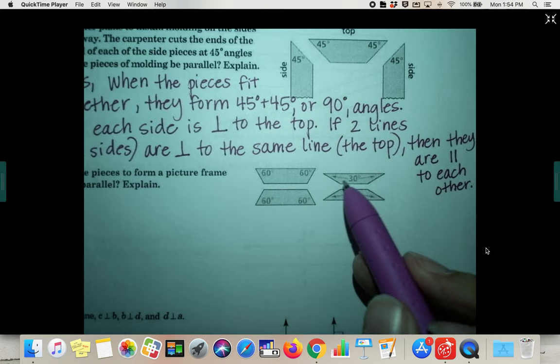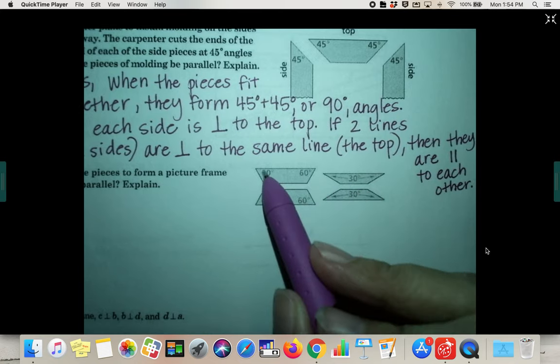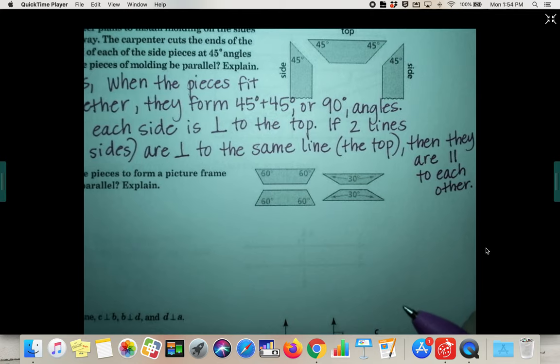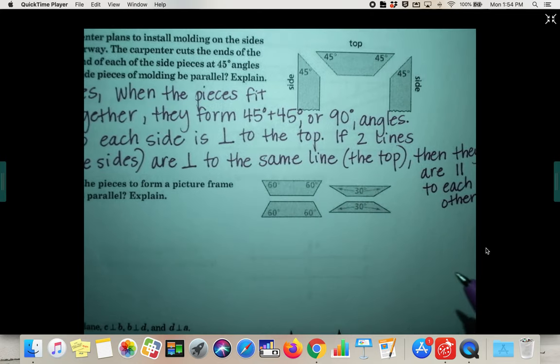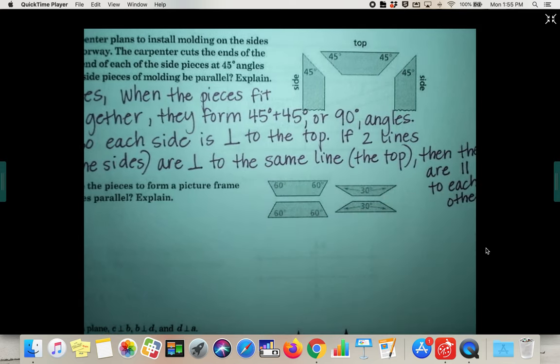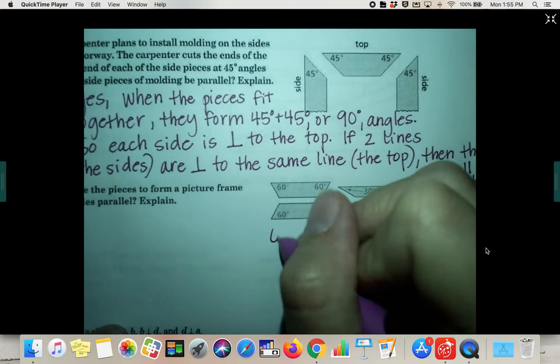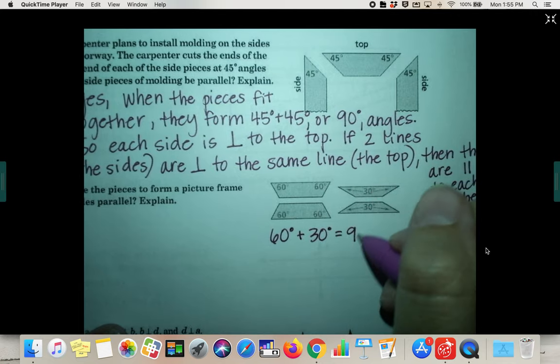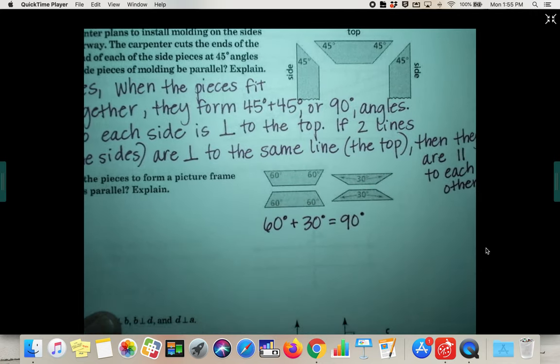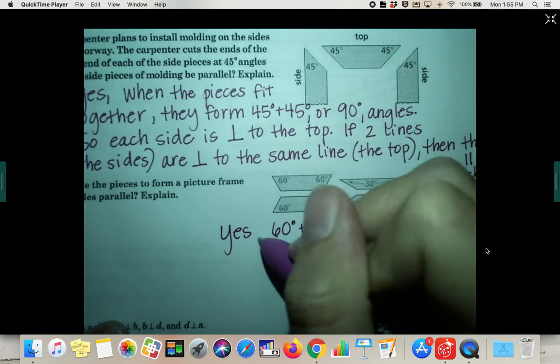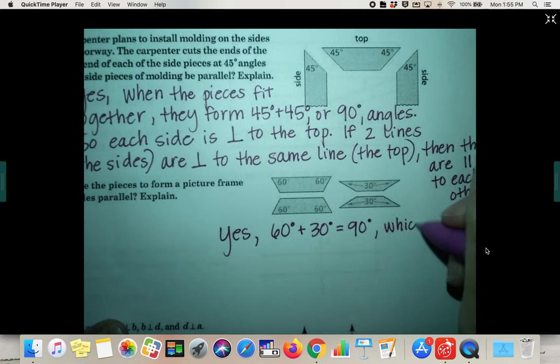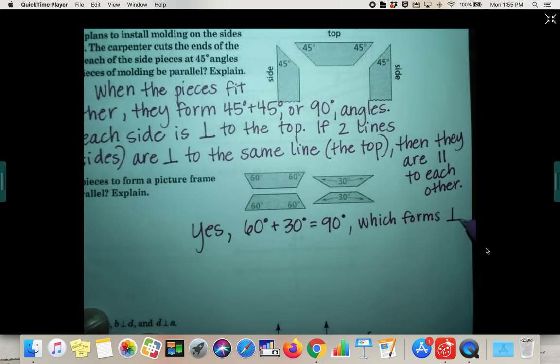So here's what I hope you guys know, that 30 degrees each plus 60 degrees each would add up to 90. So we are going to say yes again, that basically it's going to be the same explanation as up here. 60 degrees plus 30 degrees equals 90 degrees, which would form perpendicular angles.